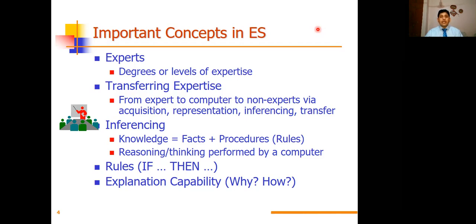This process is called acquisition — the system acquires knowledge from the experts, represents that knowledge, and through the inference engine transfers it to the user. The user gets the solution through the inference engine from the expert system, while the expert system provides knowledge based on the knowledge base and rules. Inferencing is basically: knowledge equals facts plus procedures. Facts cannot be changed at any level — for example, your date of birth, your country's independence date — those remain fixed.